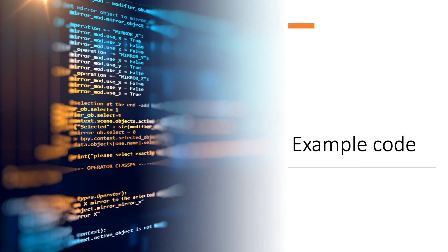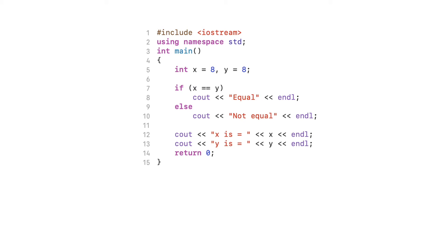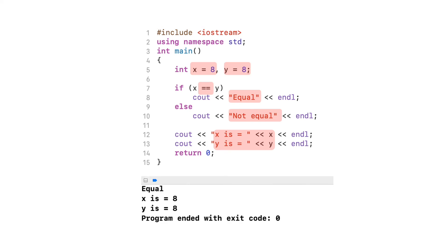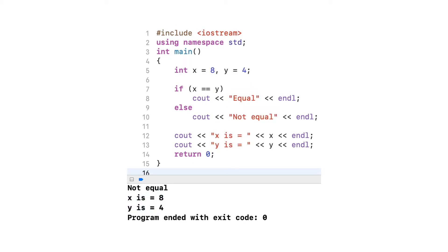Let's look at example code. Here x has the initial value of 8 and y has the initial value of 8. I'm testing whether x is equal to y using the double equal operator. If true, the program displays 'equal'; if false, it displays 'not equal'. Since x and y contain the same value, the if-statement evaluates to true and produces the output 'equal'. The values of x and y displayed are the same.